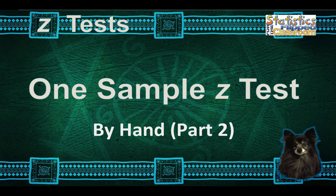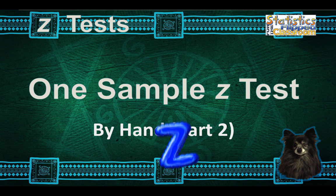In the previous video, we walked through the first three steps of hypothesis testing: selecting a test, establishing the null and alternative hypotheses, and determining the critical value. Now we are ready to calculate the statistics.